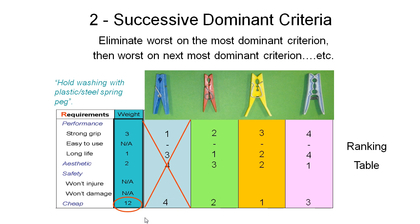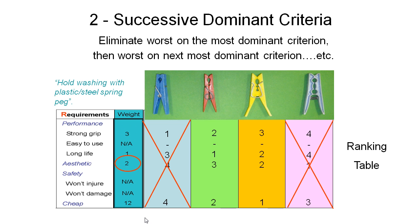We eliminate the blue peg, then find the next most important criteria: strong grip, at a weighting of 3. We eliminate the worst of the remaining three choices — the grey peg — which has the fourth rating for strong grip. Now left with two options, we go to the next weighting: aesthetics at 2. We eliminate the worst one, which is the red peg. That leaves the yellow peg as our final choice using this selection method.